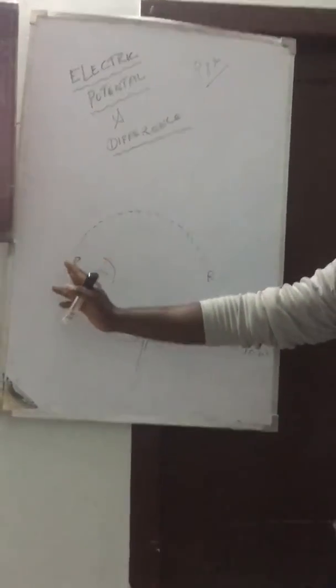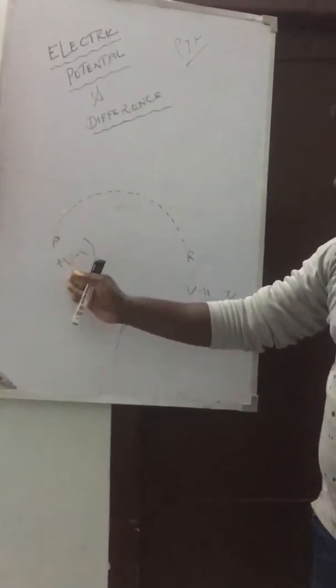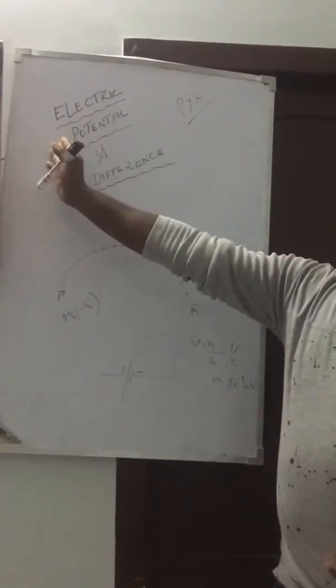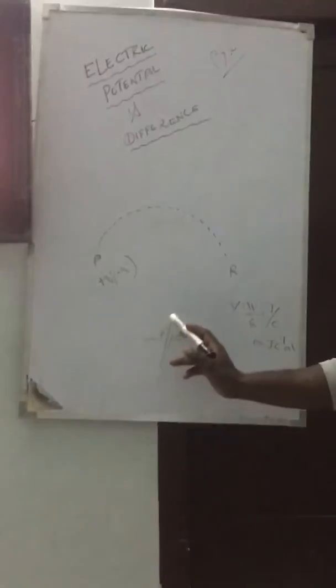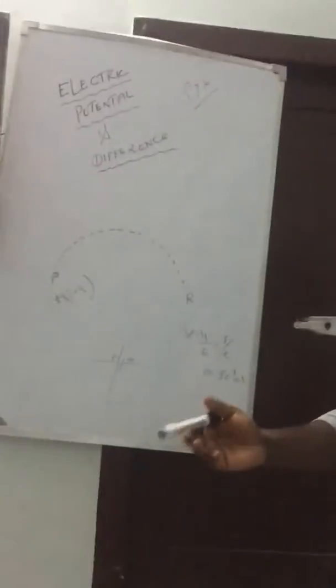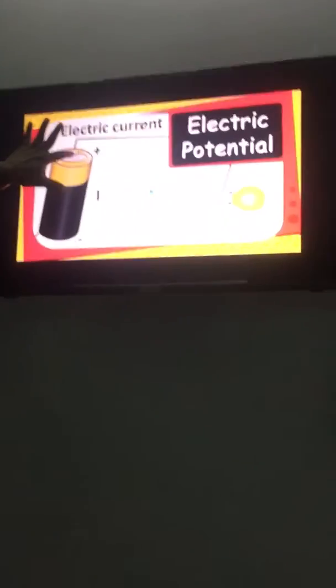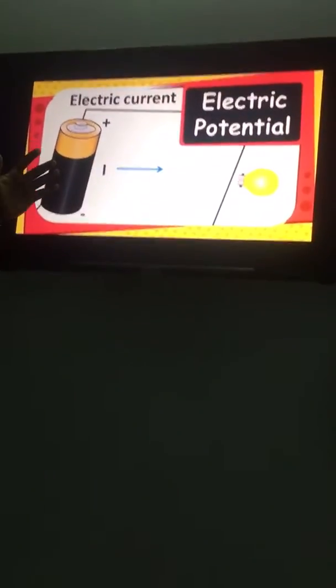To summarize: the amount of work done in moving a charge from infinity to a particular point is called electric potential. Whereas potential difference is the amount of work done in moving a charge between two points — between higher potential and lower potential. This is called electric potential difference.